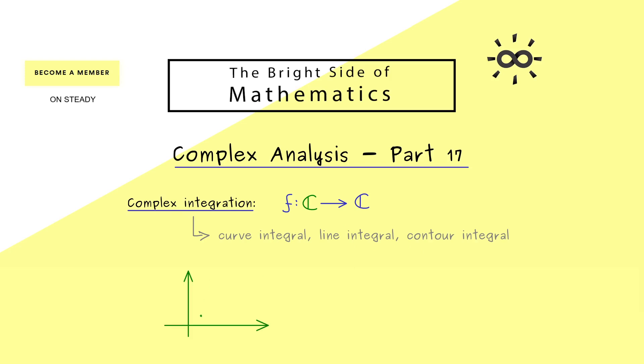You start with a curve in the domain, often called gamma. And then you apply the function f to go to the codomain. So as often in complex analysis we map the complex plane to the complex plane. Then of course on the right hand side in the codomain the curve could look completely differently.